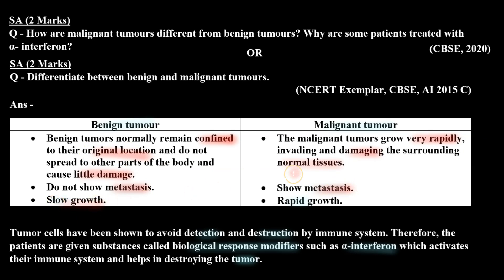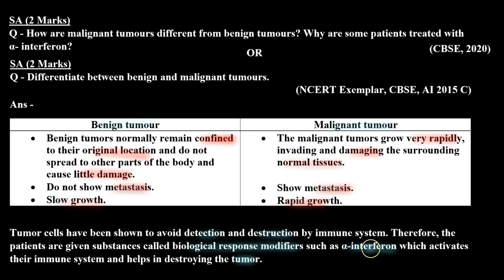Benign tumor has slow growth; malignant tumor has rapid growth. Tumor cells have been shown to avoid detection and destruction by the immune system. Therefore, patients are given substances called biological response modifiers, such as alpha interferon, which activates their immune system and helps in destroying the tumor.